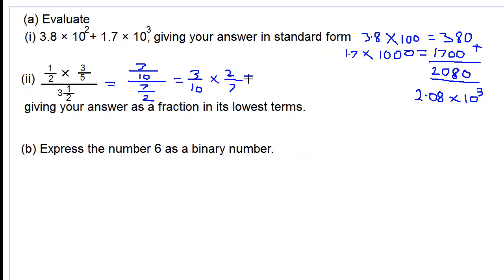So we cancel: 2 into 2 is 1, 2 into 10 is 5. 3 times 1 is 3 over 5 times 7 is 35. So we have 3/35 as our answer.